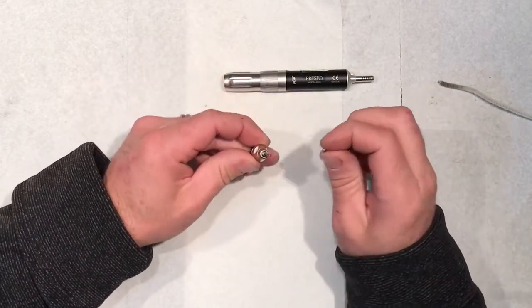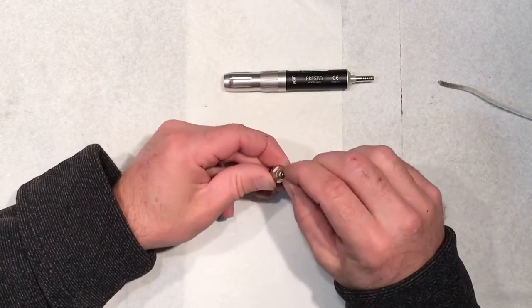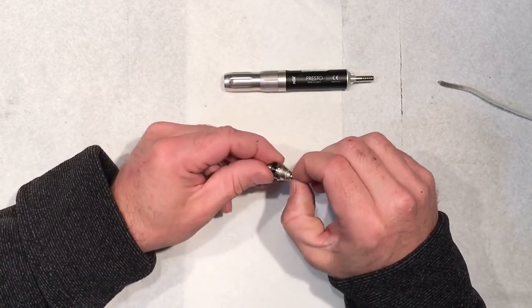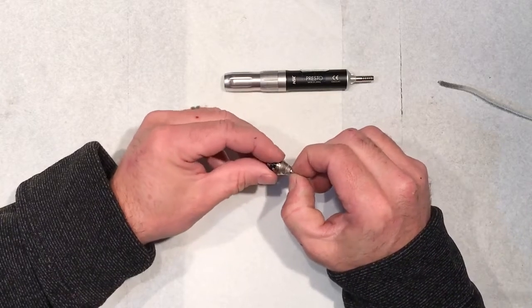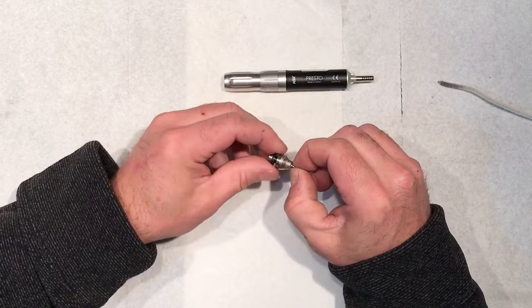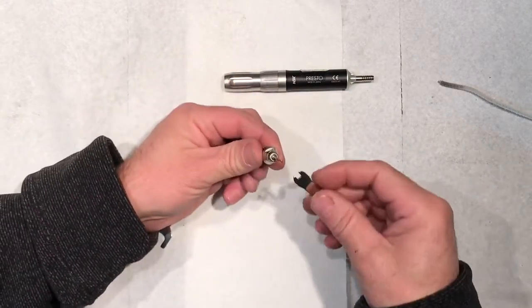Then we're going to take what's called the cap nut. This is just a nut that goes over and holds the chuck in. That cap nut slides down the burr. Then I'm just going to hold that cap nut with my fingernails and turn the back of the burr till I get the thread started.